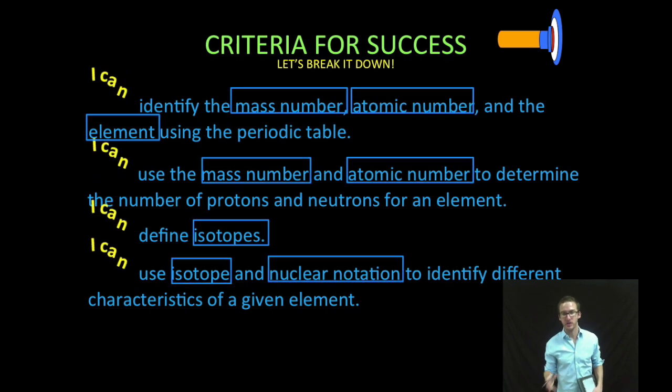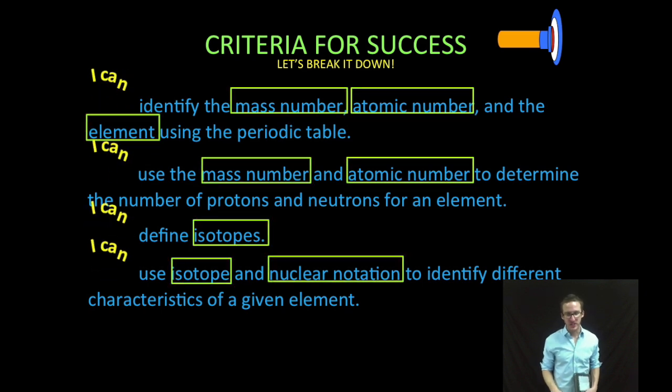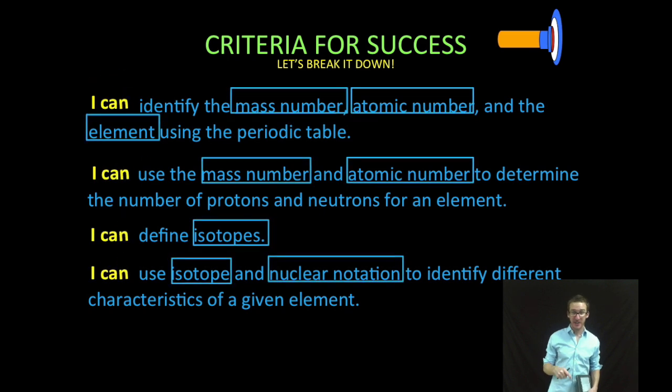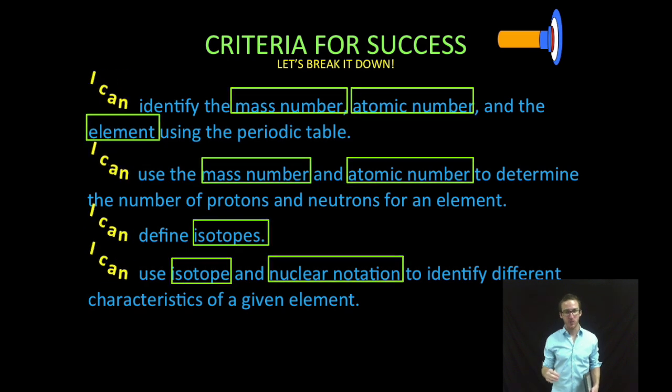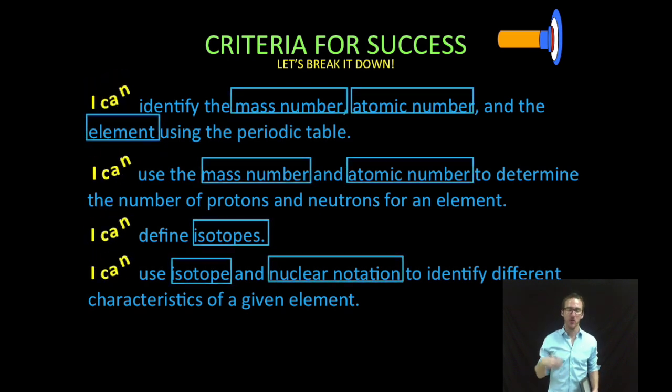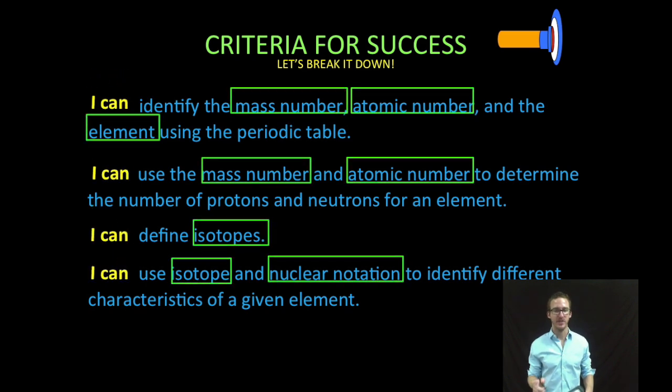Okay so as we break this video down a little bit further we are going to identify the mass number, atomic number and the element using the periodic table. Use the mass number and atomic number to determine the number of protons and neutrons for an element. Define isotopes and finally numero quattro. Use isotope and nuclear notation to identify different characteristics of a given element.